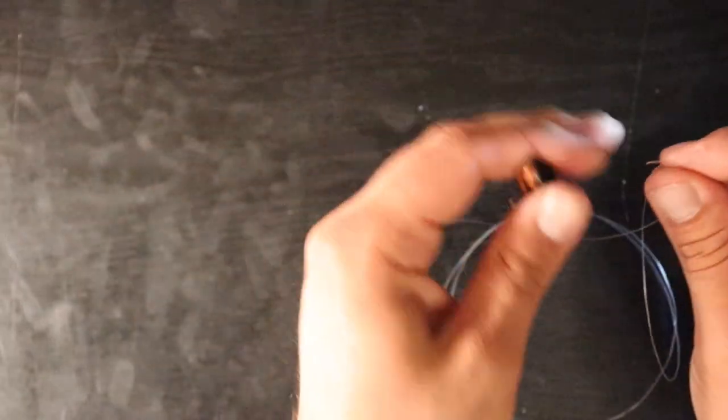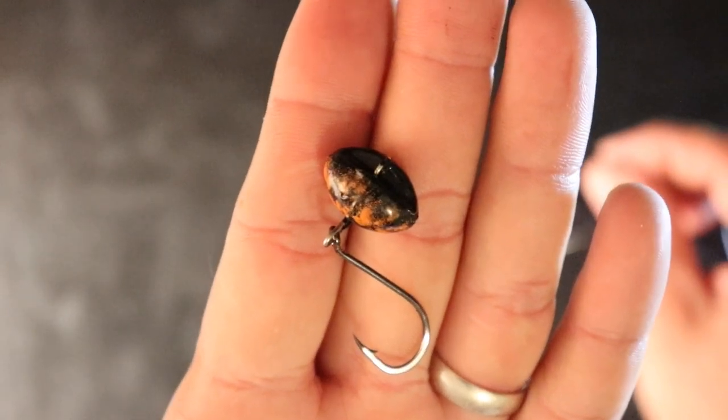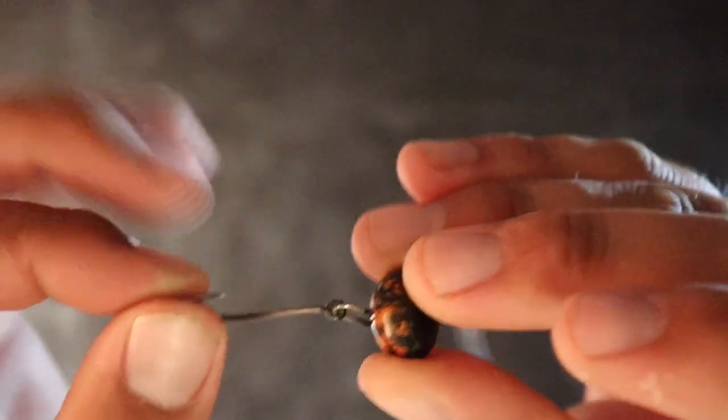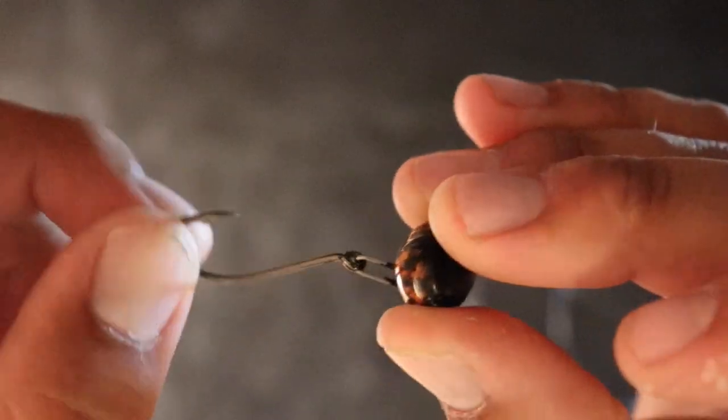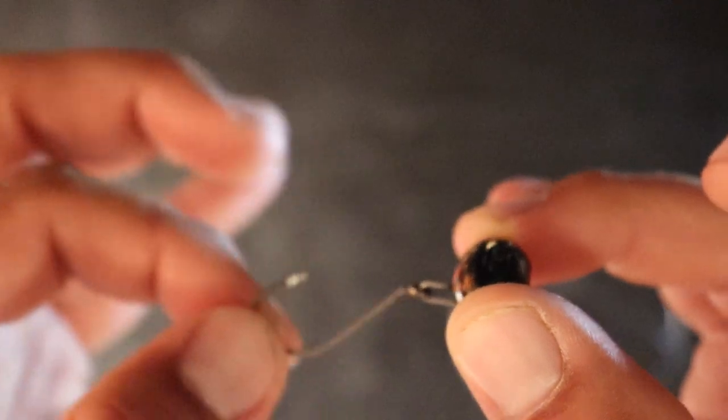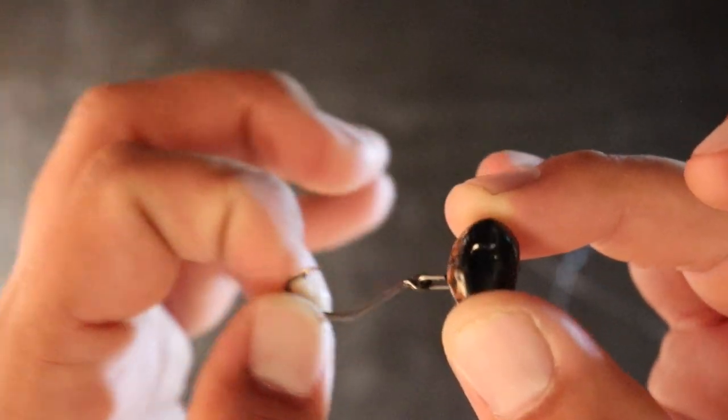The next rig we have is the swing jig. And so this one, you can see it's got the weight on top, kind of like a knocker rig does. However, the connection between the weight and the hook, as you can see there, kind of allows that hook to move freely. As that weight is hanging, that bait is going to be able to move freely, which is going to give it more of a natural presentation.